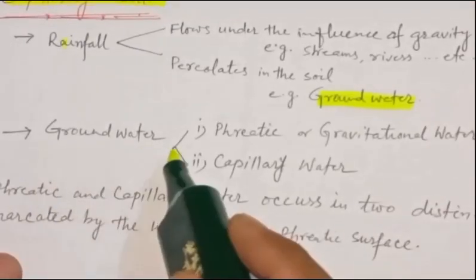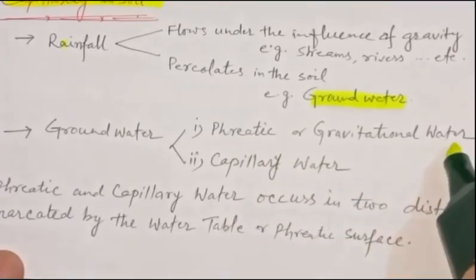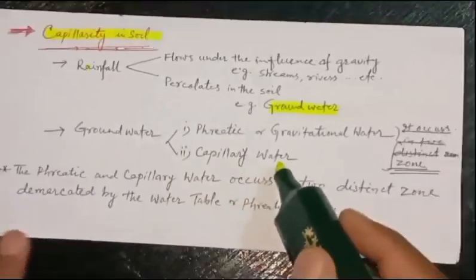Groundwater is of two types: ferritic or gravitational water, and capillary water.